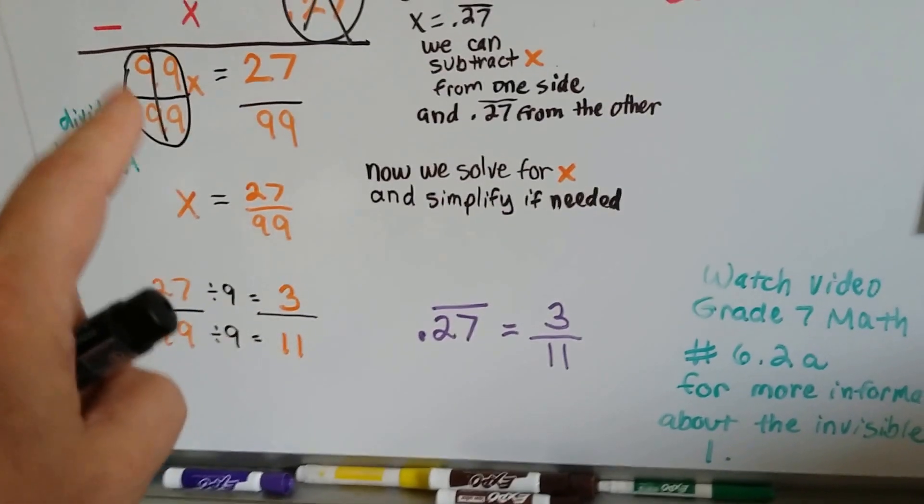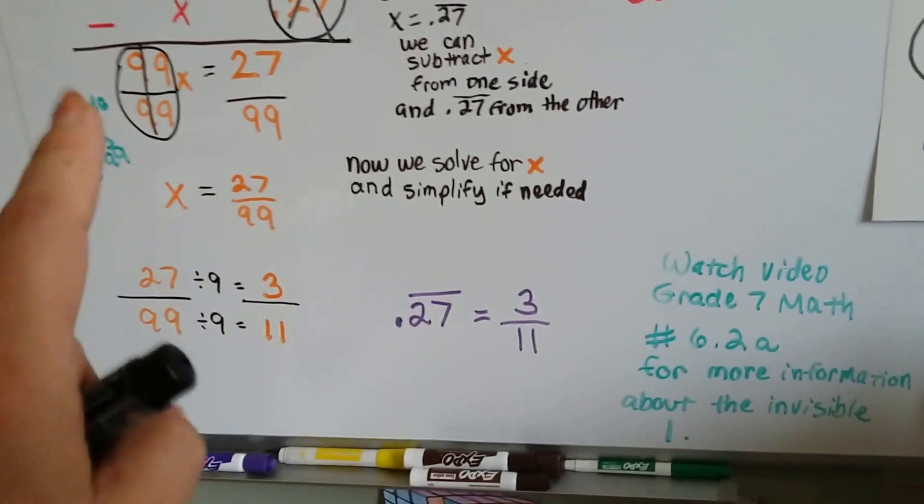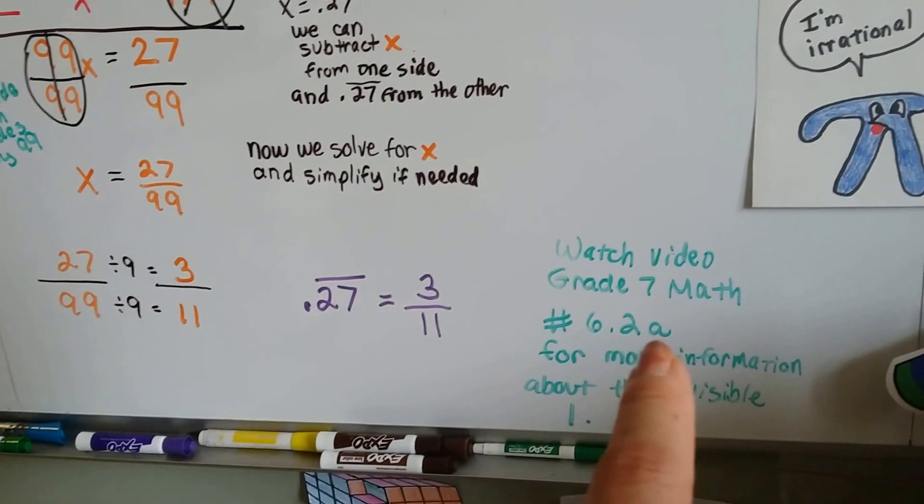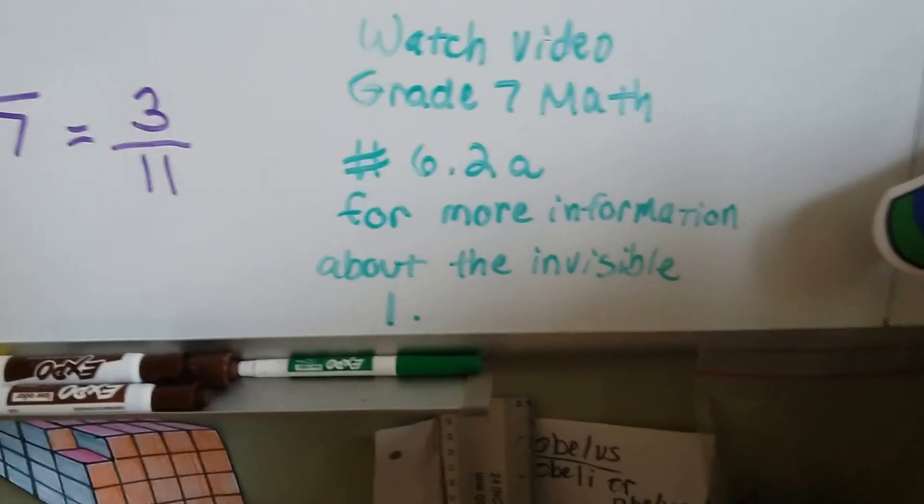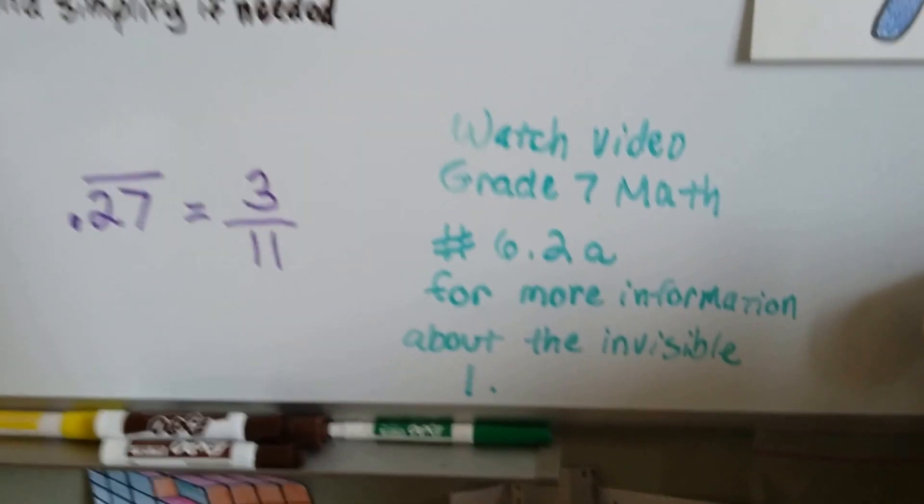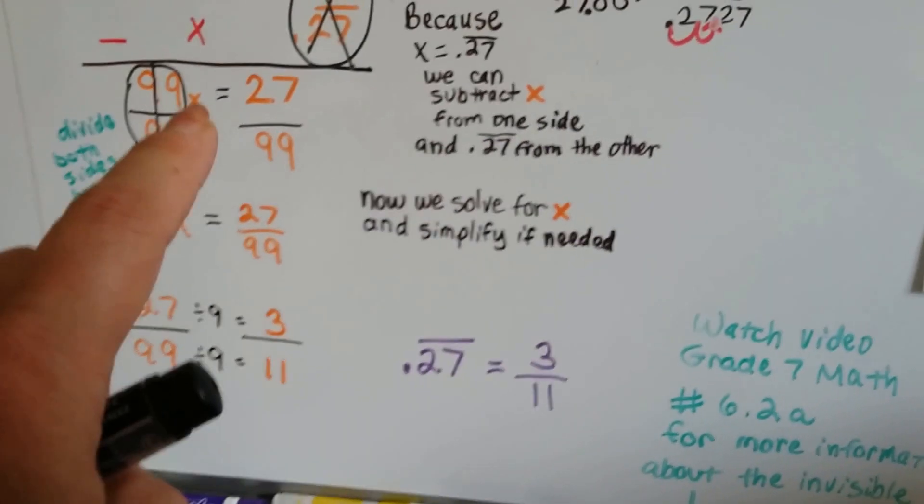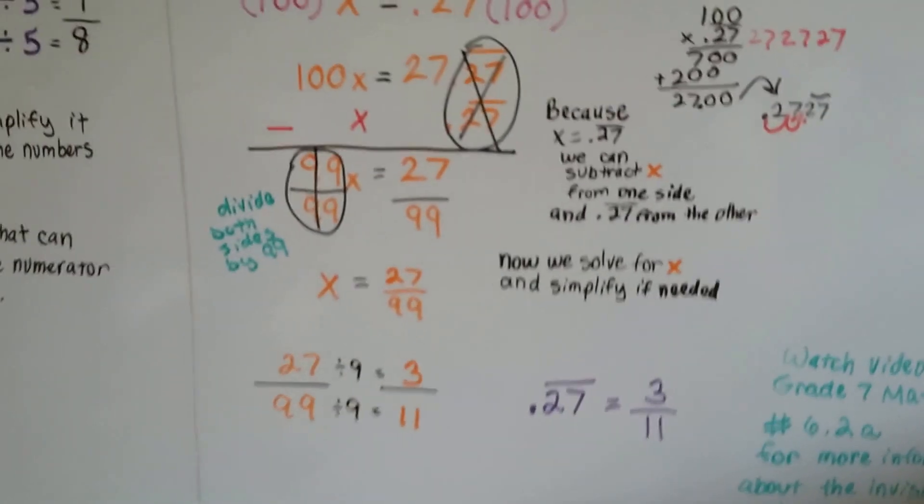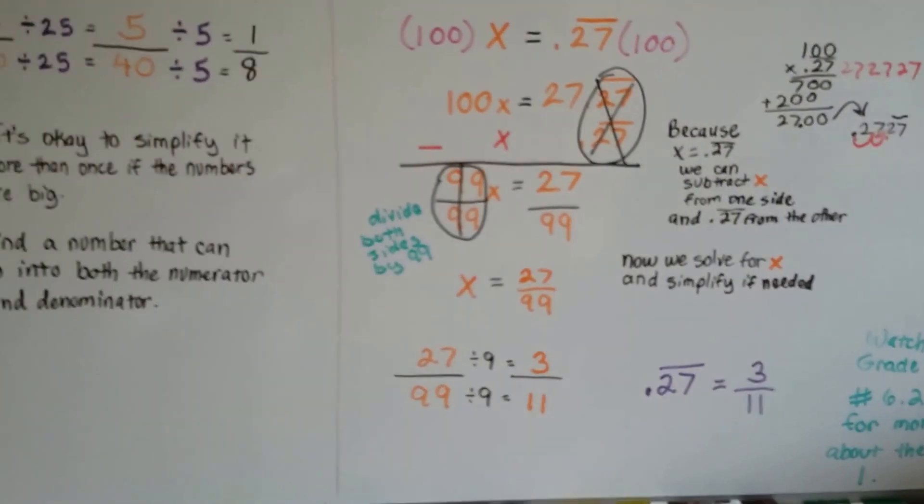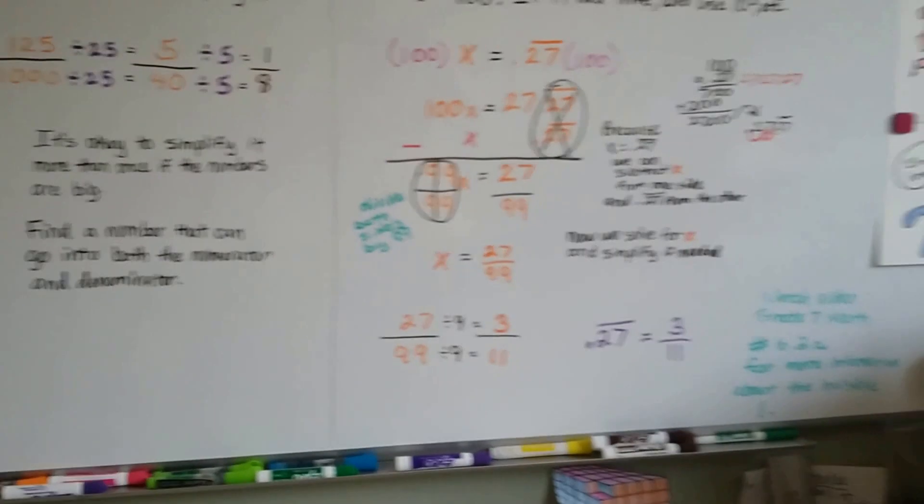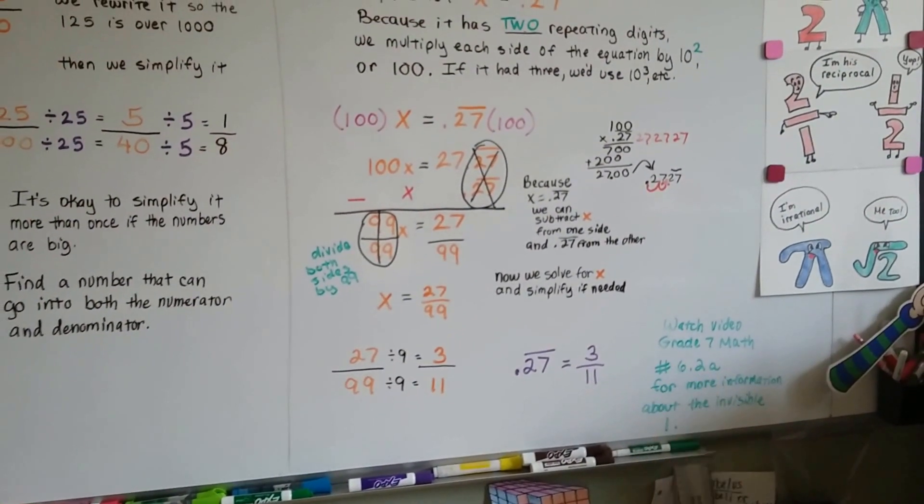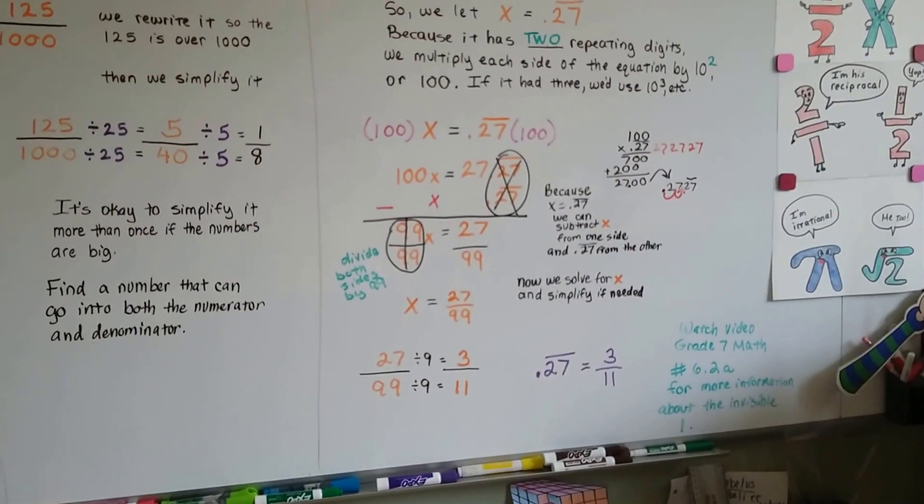Now, if you're really confused about this invisible 1, well, then you didn't catch my video in grade 7 math. It was number 6.2a. And that will give you more information about that invisible 1. In front of every variable, there's an invisible 1. It's a very short, quick video and it will be really helpful to you in algebra. So, I advise you to go take a look at it. Number 6.2a in the grade 7 math list, in the playlist.